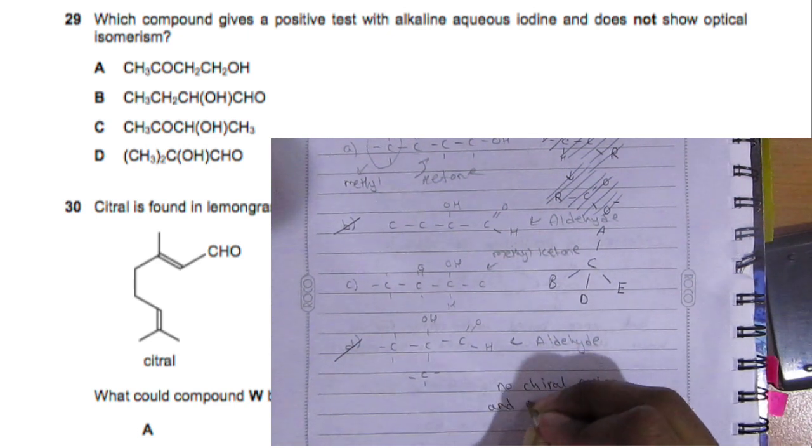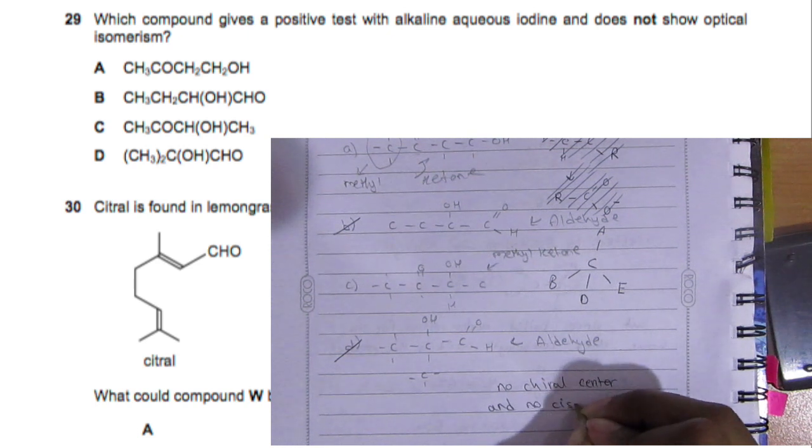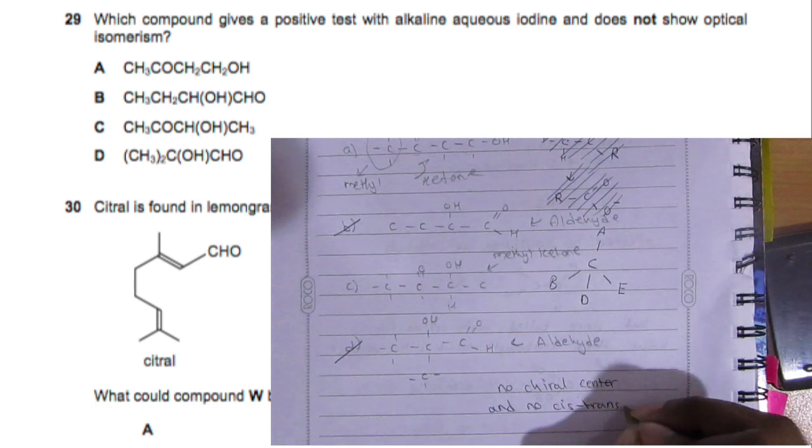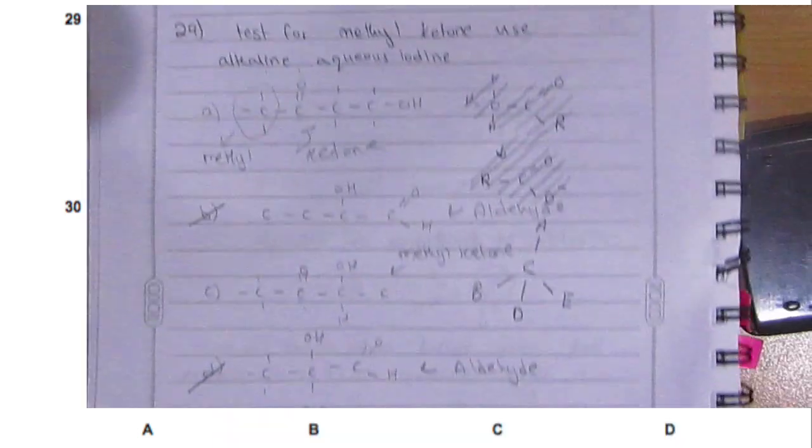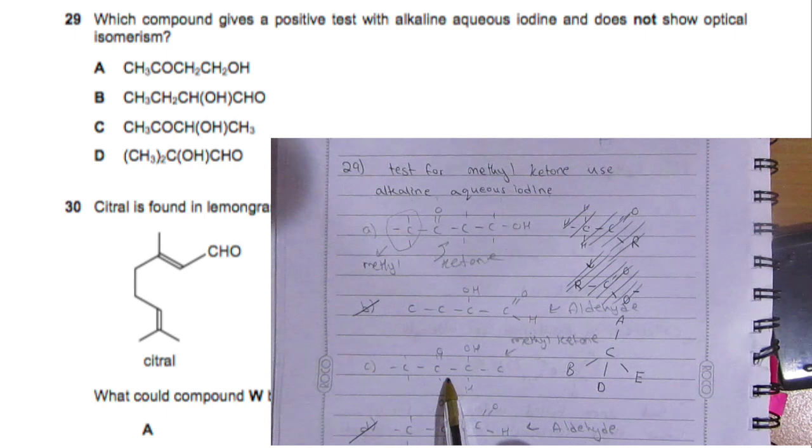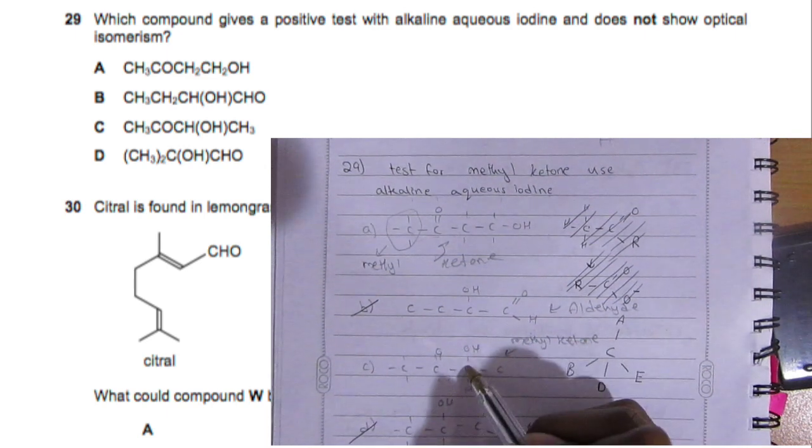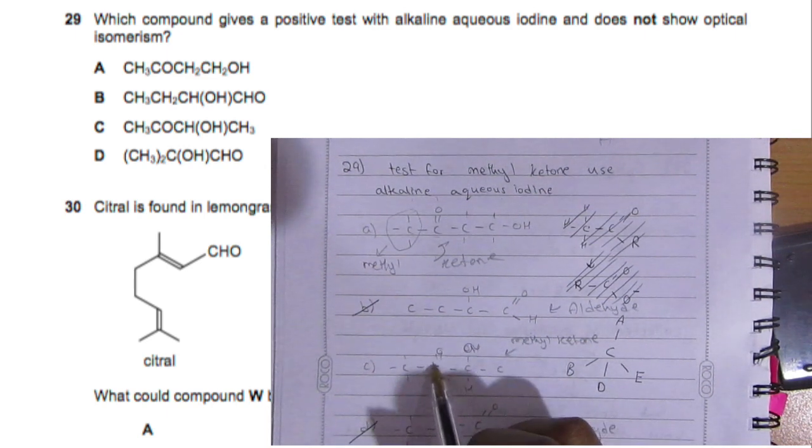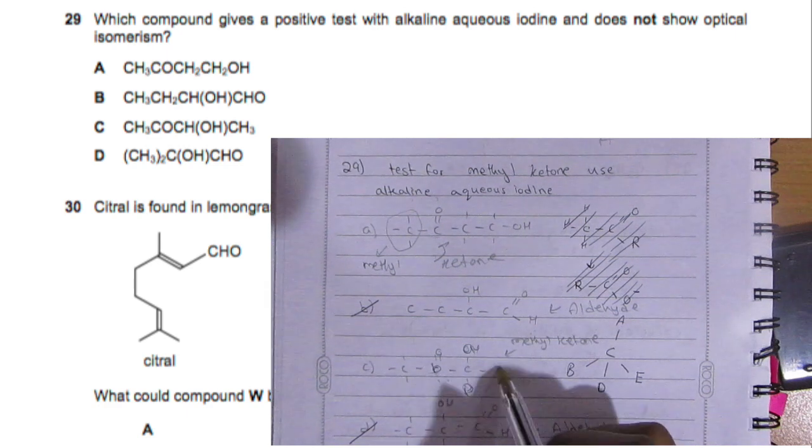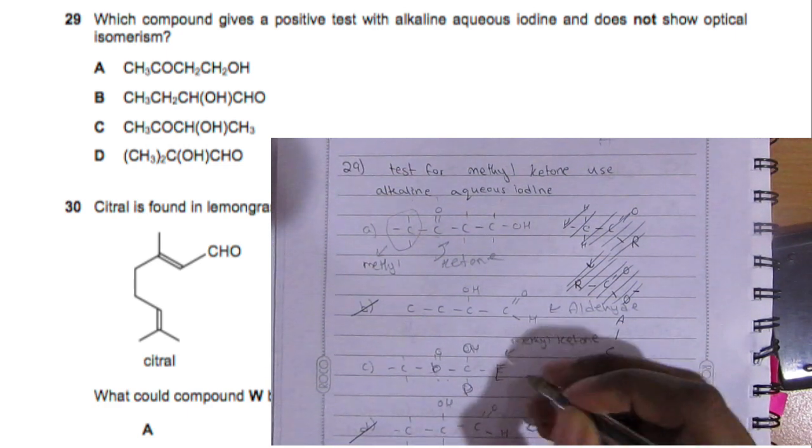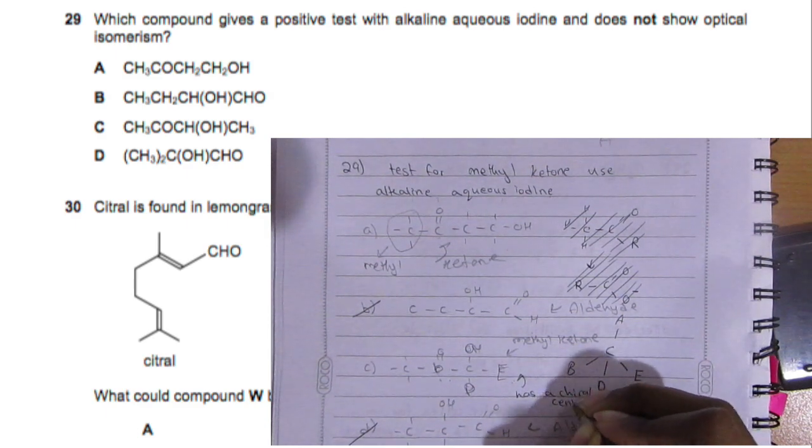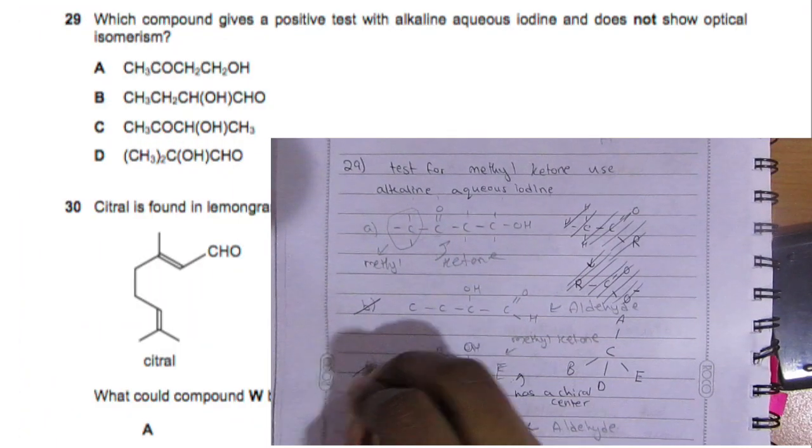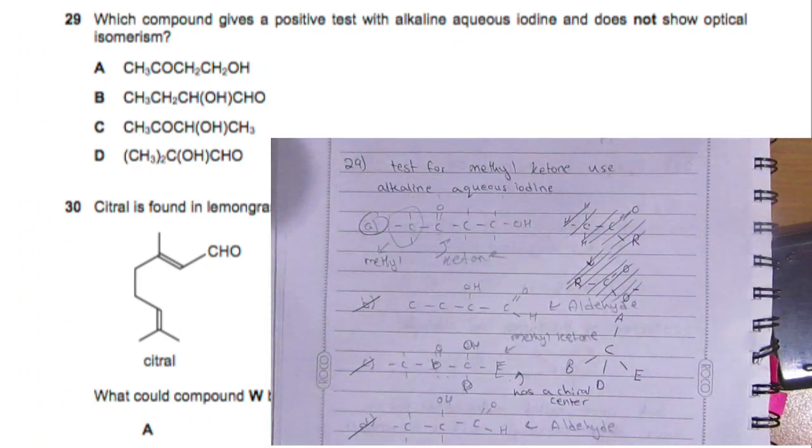Part C does have a chiral center because one of the carbons is connected to four different elements and/or compounds. So you have A, B, D, and E, and so it has a chiral center. That means it shows optical isomerism, so no, not C. Then your answer will have to be A.